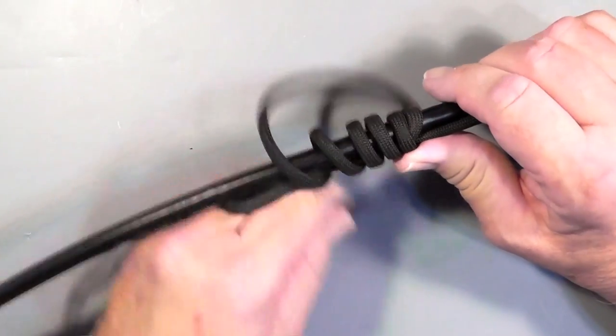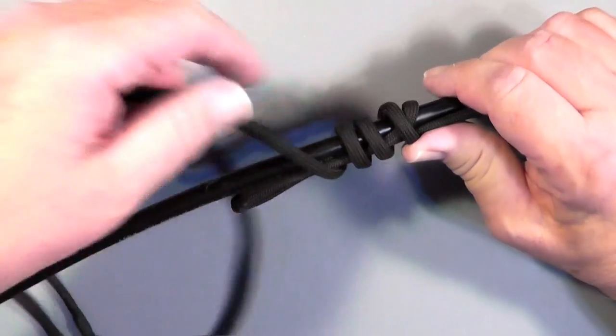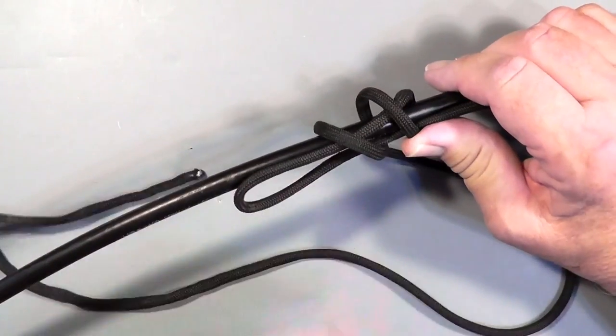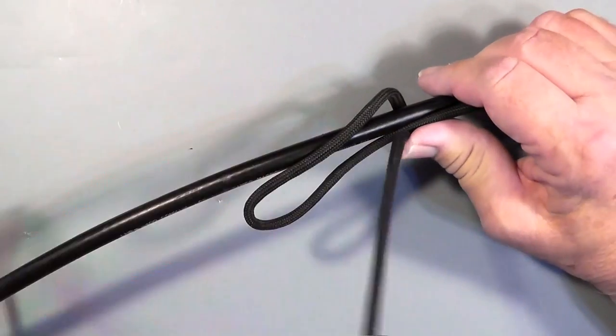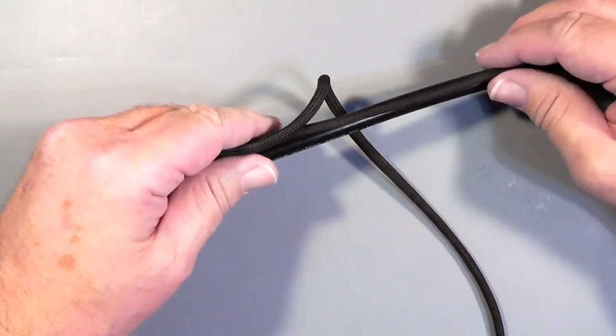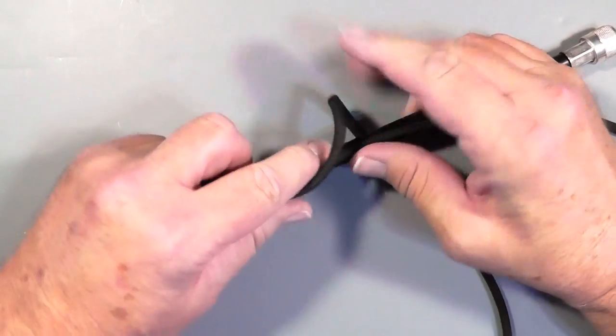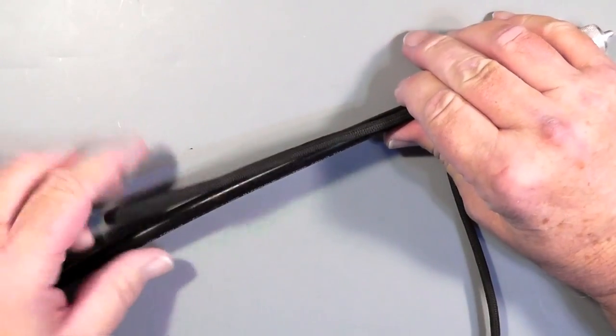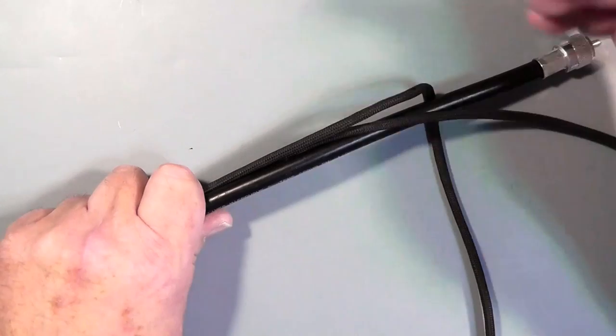Now what you might do in a situation where we did have a little bit of slip, is to make the loop longer, like that. Because each grip around holds it a little bit.